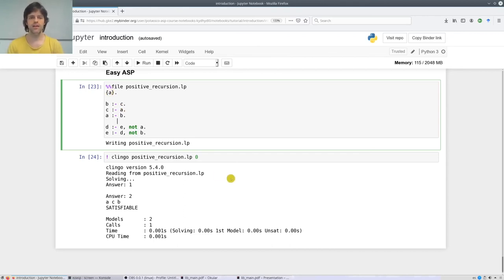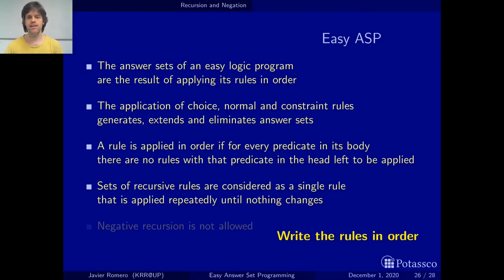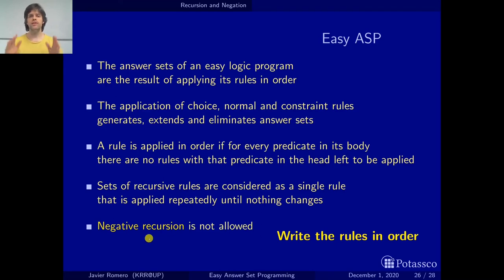To finish this section, we will just sum up what we have seen here. The summary is very simple: this is what we had before for logic programs extended to logic programs with recursive rules, and now all we add is that negative recursion is not allowed. With this we finish this section on recursion and negation, and I hope you have enjoyed it. Let's meet in the next video — stay tuned, ciao!